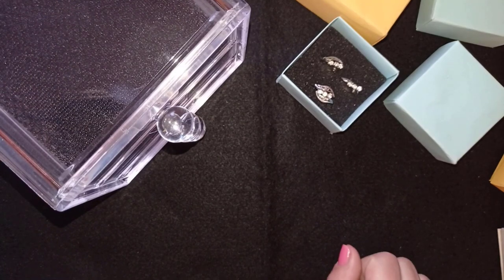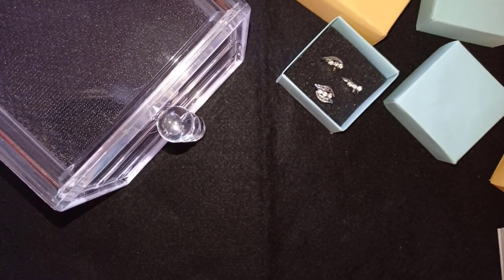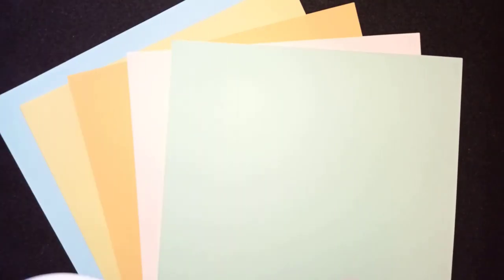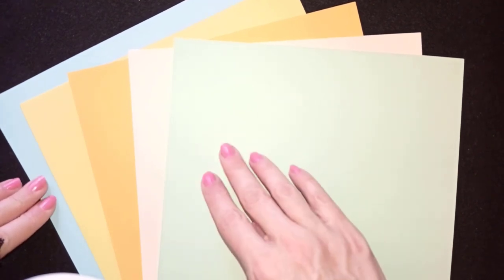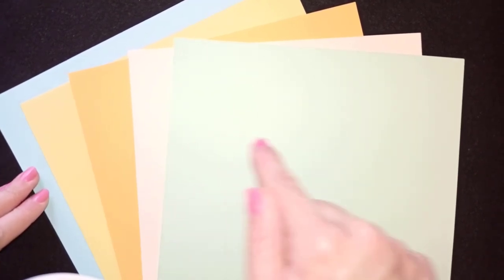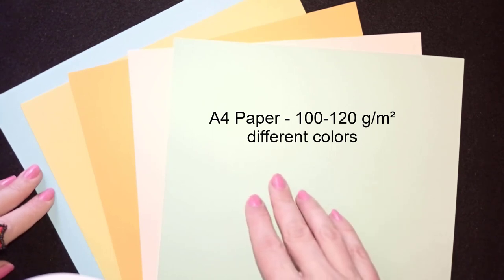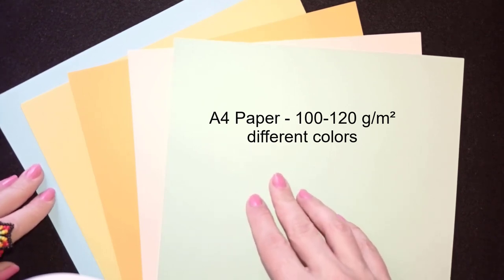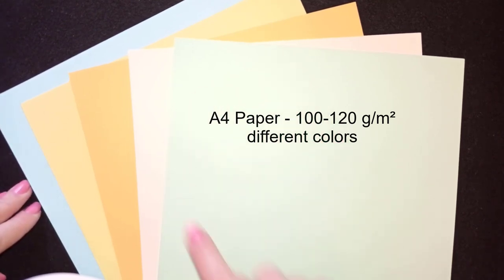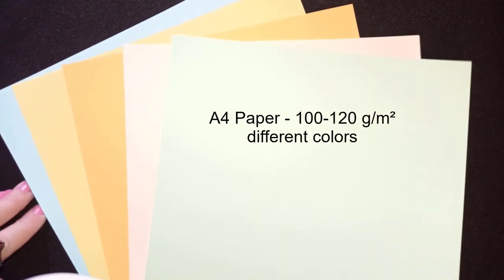Okay so now I'm going to start with the list of the materials. The first thing I'm using here are A4 sheets of paper and they are 100 or 120 grams per square meter. Usually most of the office paper is 80 grams per square meter but these are 100 or 120.